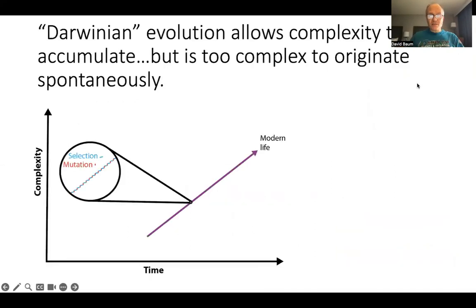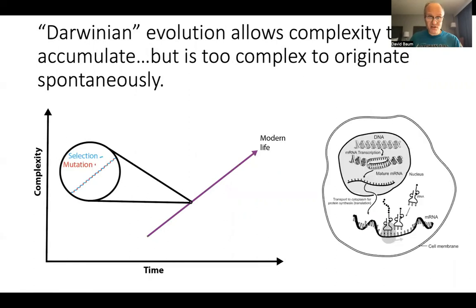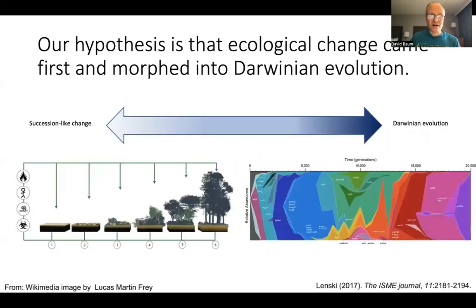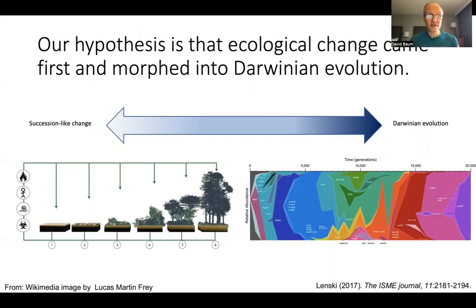The problem we're trying to understand is how complex life could originate, given that while conventional Darwinian evolution has ways to accumulate complexity, the machinery needed for Darwinian evolution — namely some kind of individuated cell or organism and a genetic machinery to encode information — is too complicated to arise spontaneously. The approach we're taking is to imagine that when life originated, there was some simpler mode of change, more like ecological succession, that gradually morphed over time to give rise to the efficient kind of adaptive Darwinian evolution we see today.